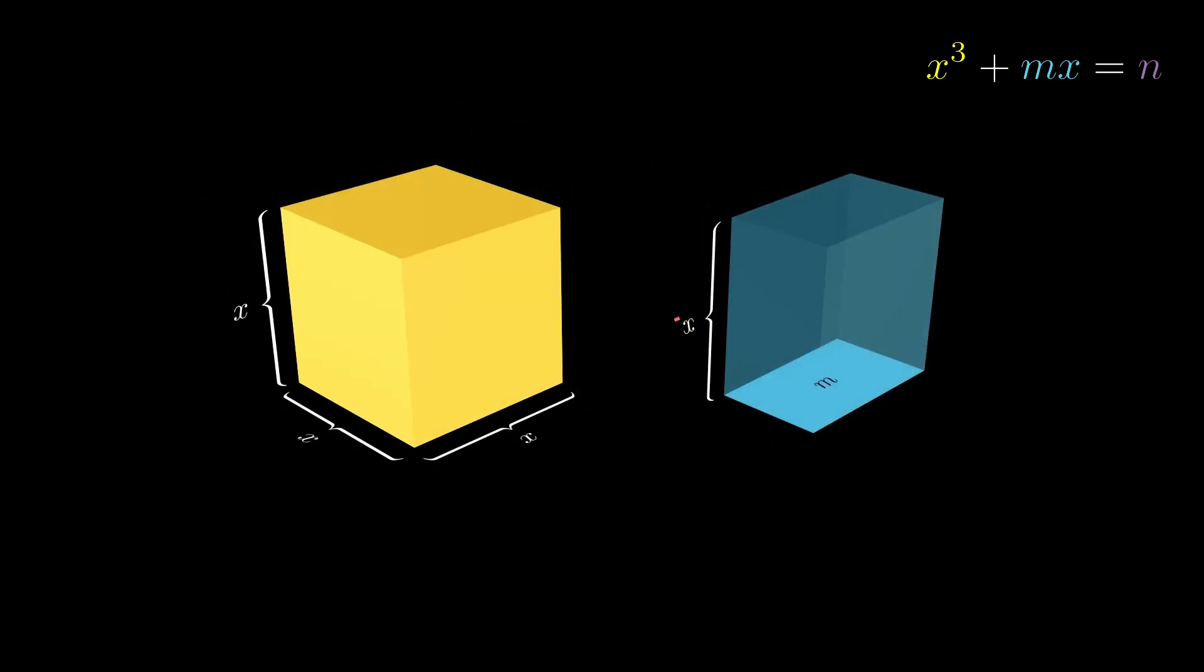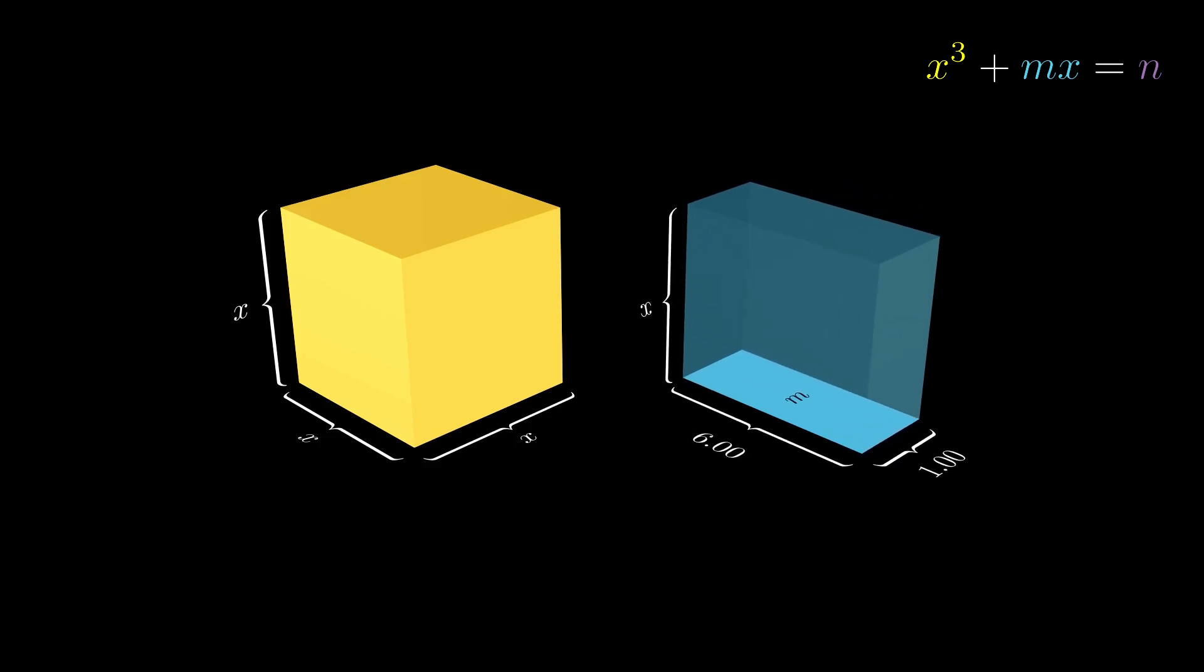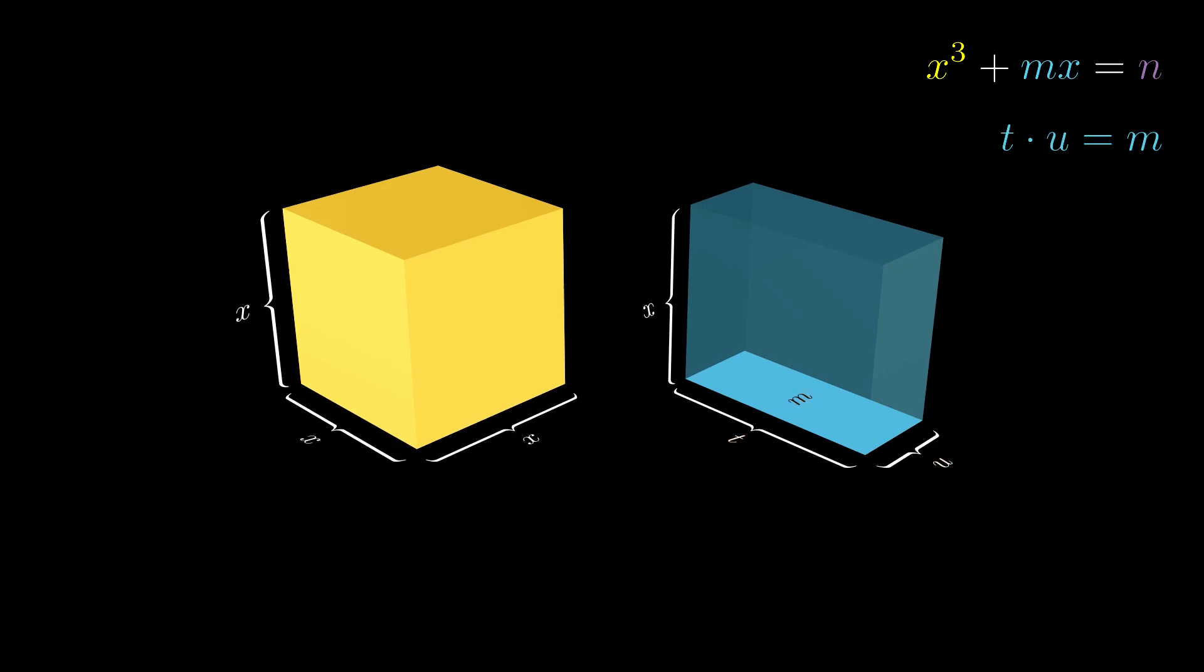For the blue prism, the height is x and the bottom area m. This means that the side lengths can be whatever as long as their product equals m. Let's call these side lengths t and u and set some criteria for the blue shape. Number one, t times u is equal to m, since that's the bottom area.